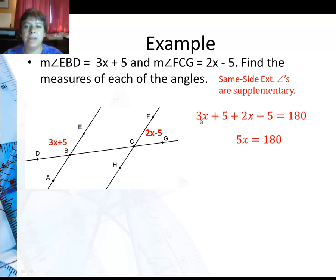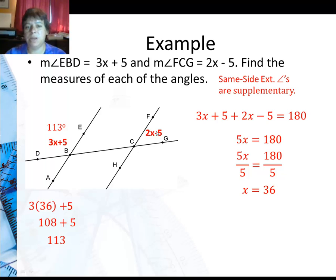Now I can combine like terms, 3x plus 2x is 5x. 5 minus 5 is 0, so that kind of goes away. And then divide both sides by 5, and I get x is 36. So I'll substitute into here the 3x plus 5, there's the 36. 3 times 36 is 108, plus 5 is 113.